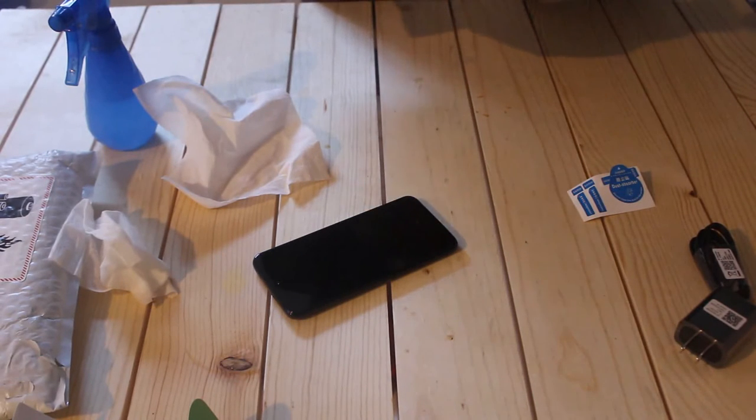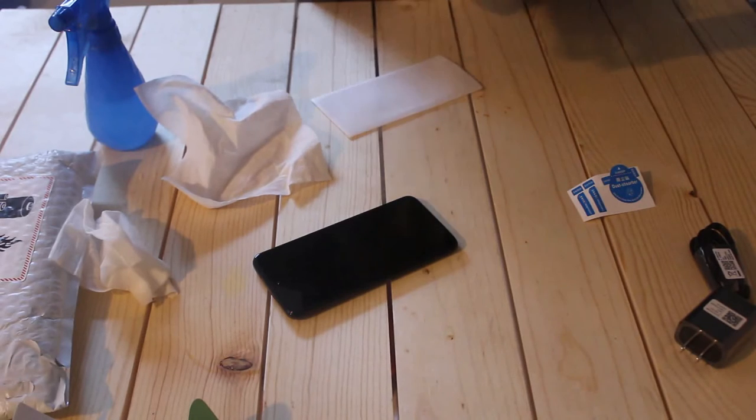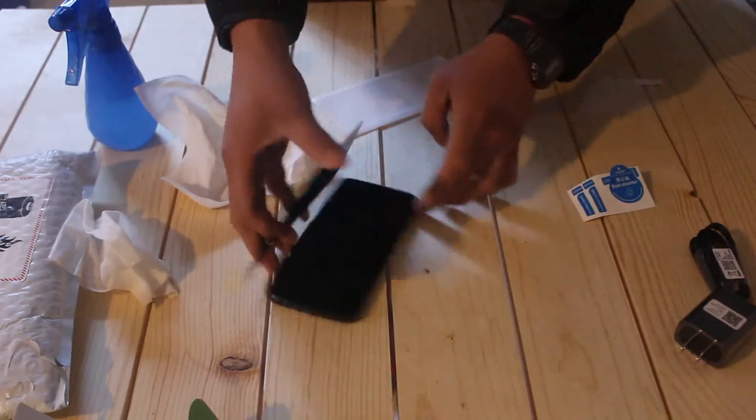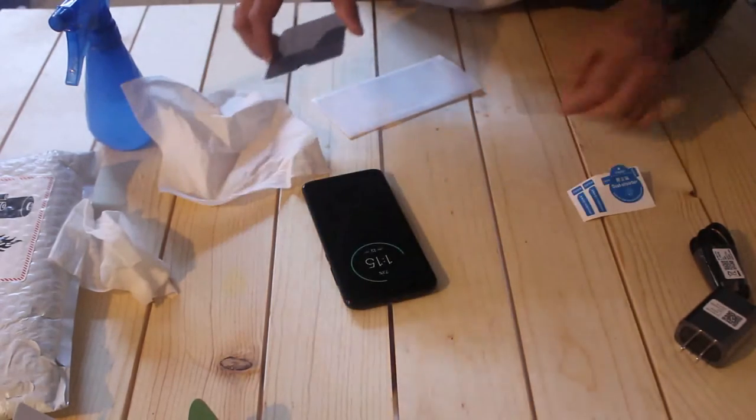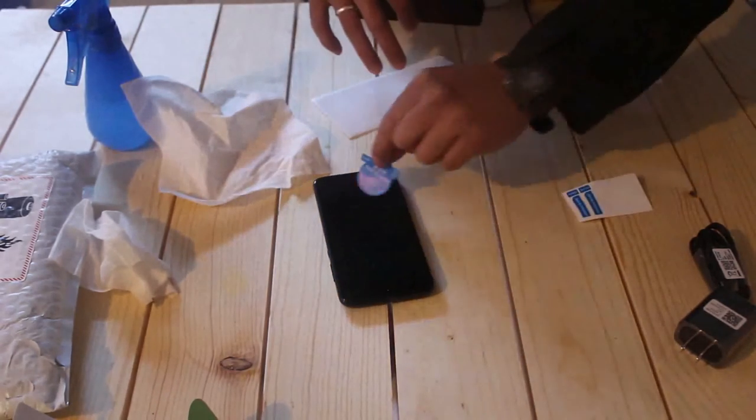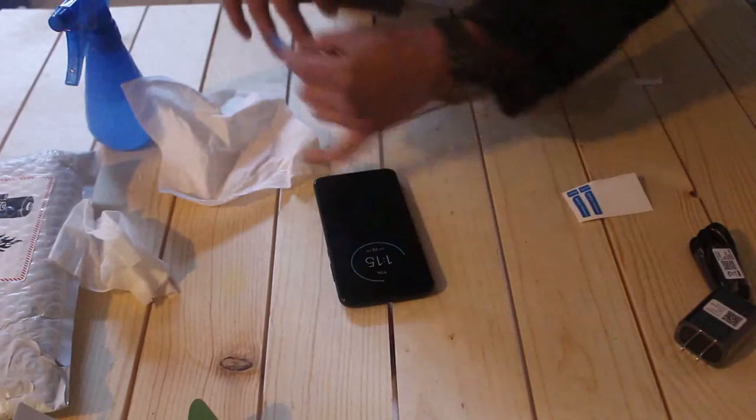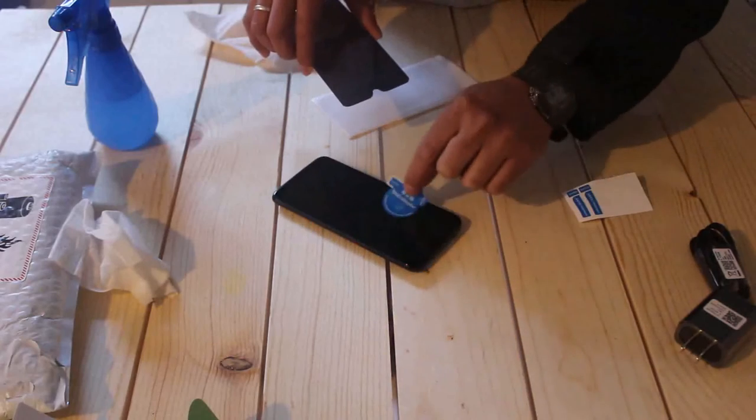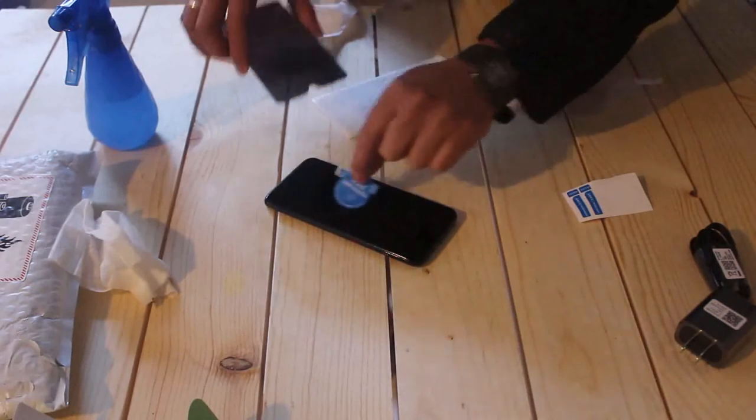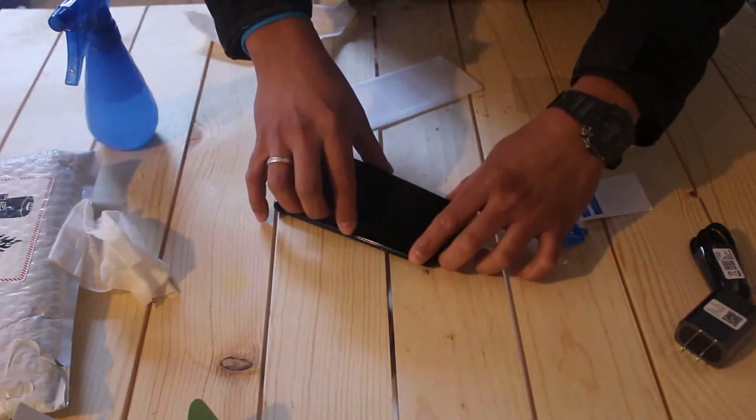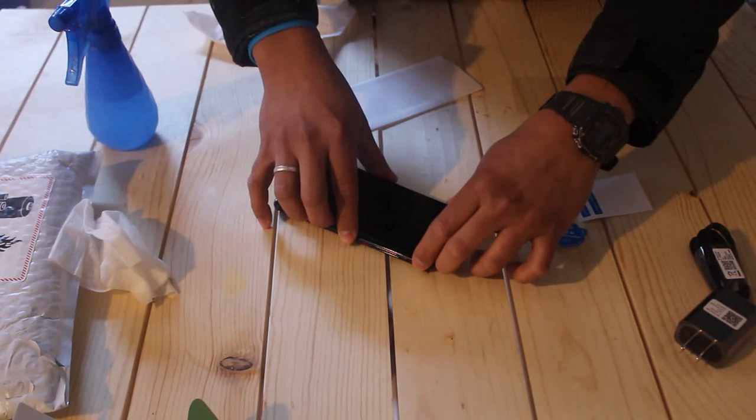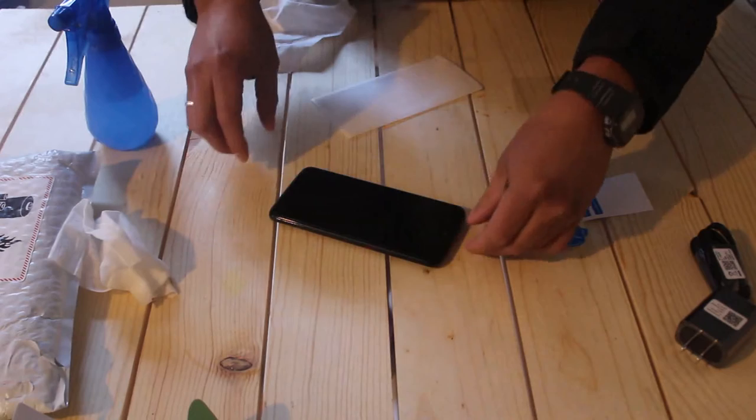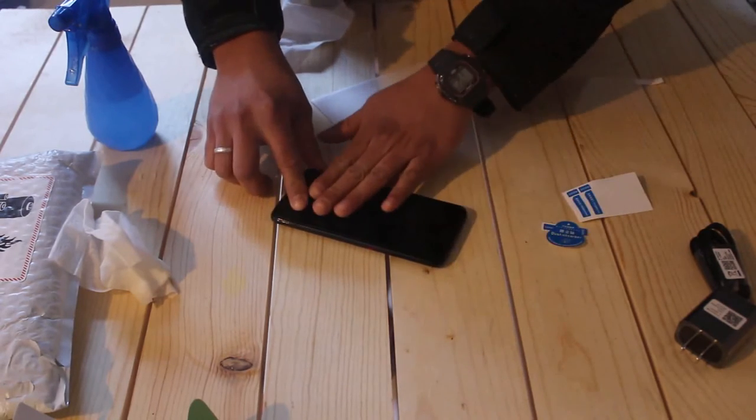After I'm done with the dust remover, I'm going to peel off the film from the screen protector. I wanted to make sure there's no dust at all because I've seen one single dust on my screen, so I used the dust remover again. Then I applied and installed the privacy screen protector for my phone.